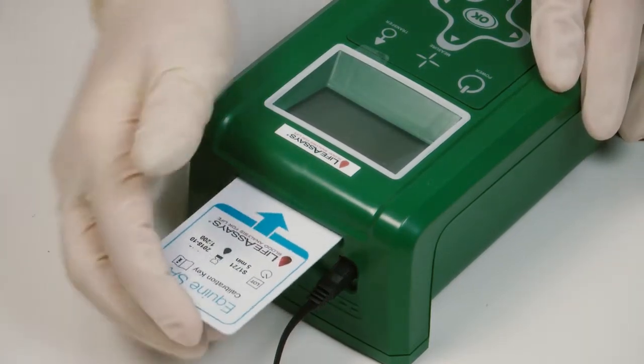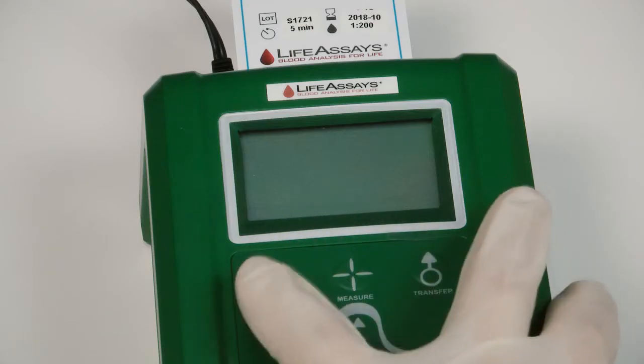Insert the calibration key with the label facing up and turn on the Magnea Reader.